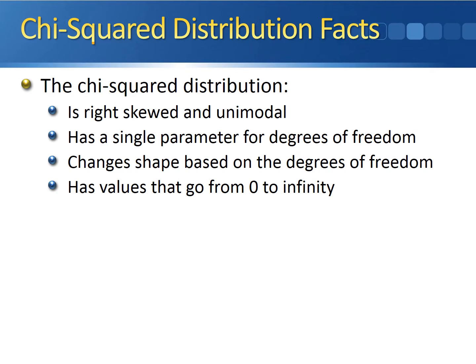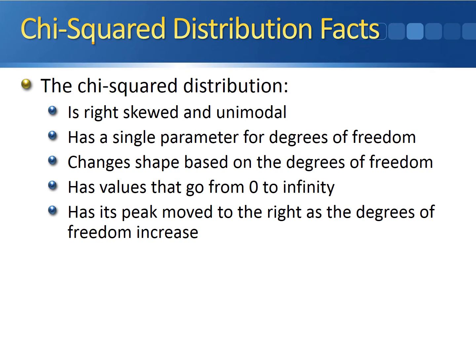The values of the chi-squared distribution go from zero to positive infinity. This is different from the standard normal and t-distributions, because those values could be negative — the chi-squared distribution can never be negative. Finally, the chi-squared distribution has its peak moved to the right as the degrees of freedom increase.